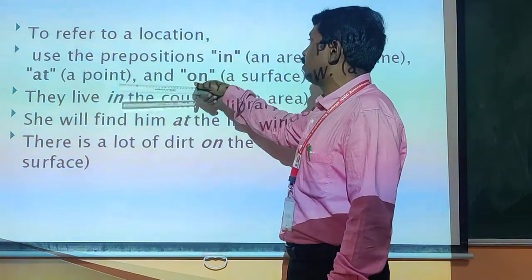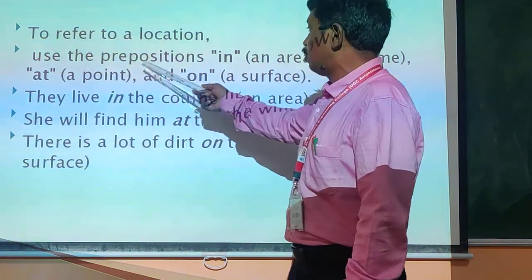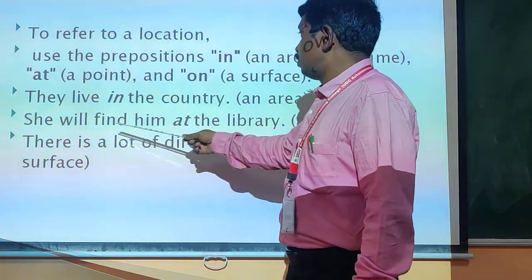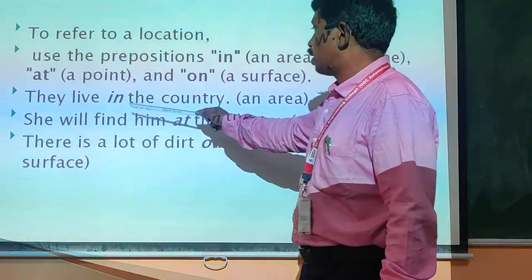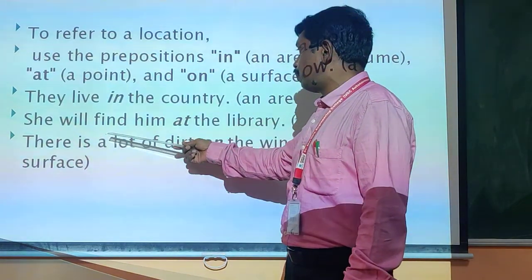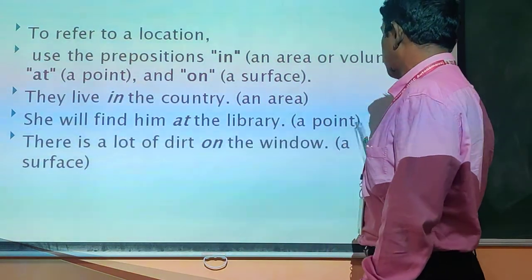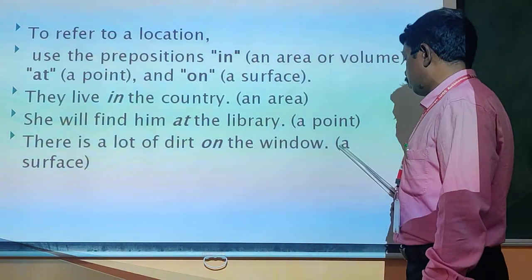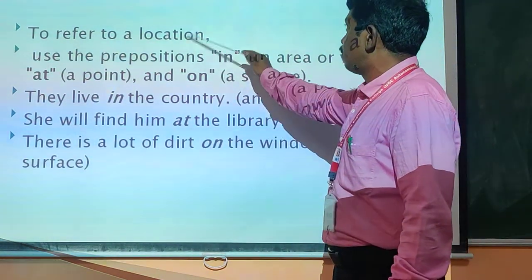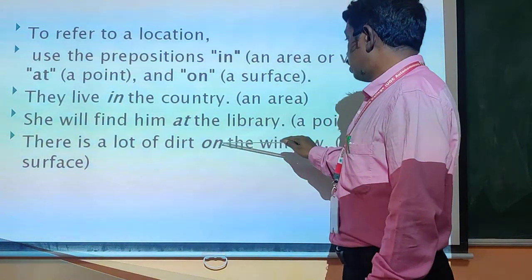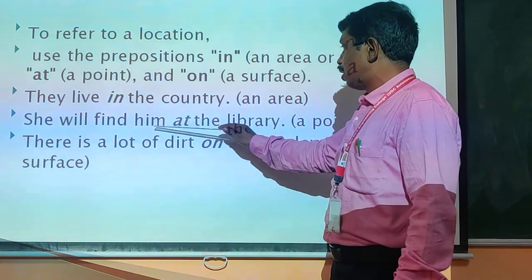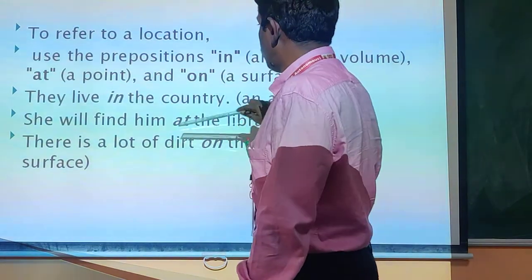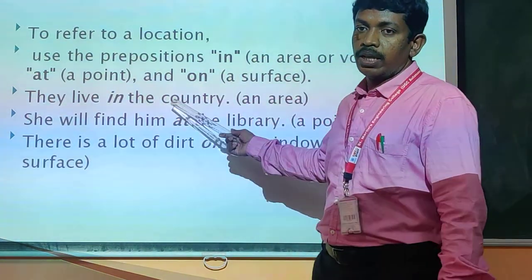The next type is preposition of location. To refer to a location, use the preposition 'in' for an area, 'at' for a point, and 'on' for a surface. They live in the country — it shows the area. She will find him at the library — this is a point showing where he is. There is a lot of dirt on the window — 'on' shows the surface. So we can say where things are located.